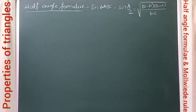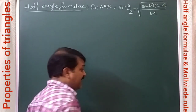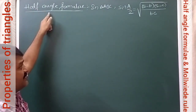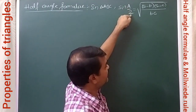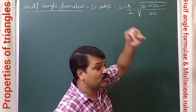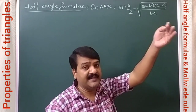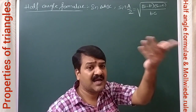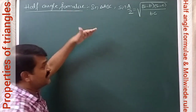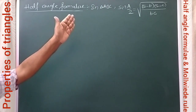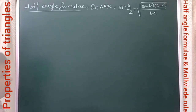Now let us derive half angle formulae. We call them half angle formulae because in the formulas we have the angles as A/2, B/2, C/2. Here A, B, C are the angles of a triangle, and A/2, B/2, C/2 are called half angles. The formulas will be expressed in terms of A/2, B/2, C/2, and therefore we call them half angle formulae.